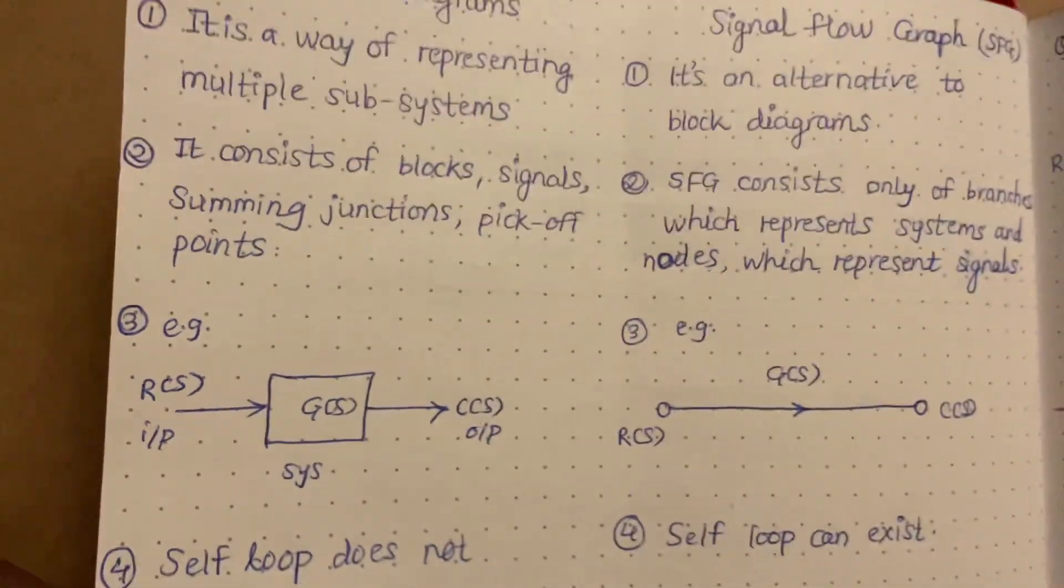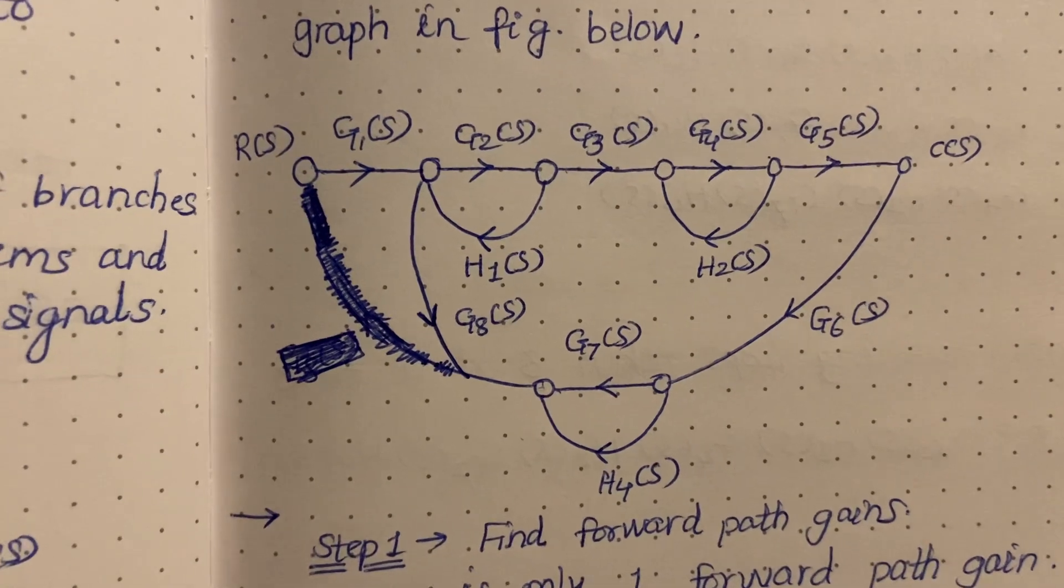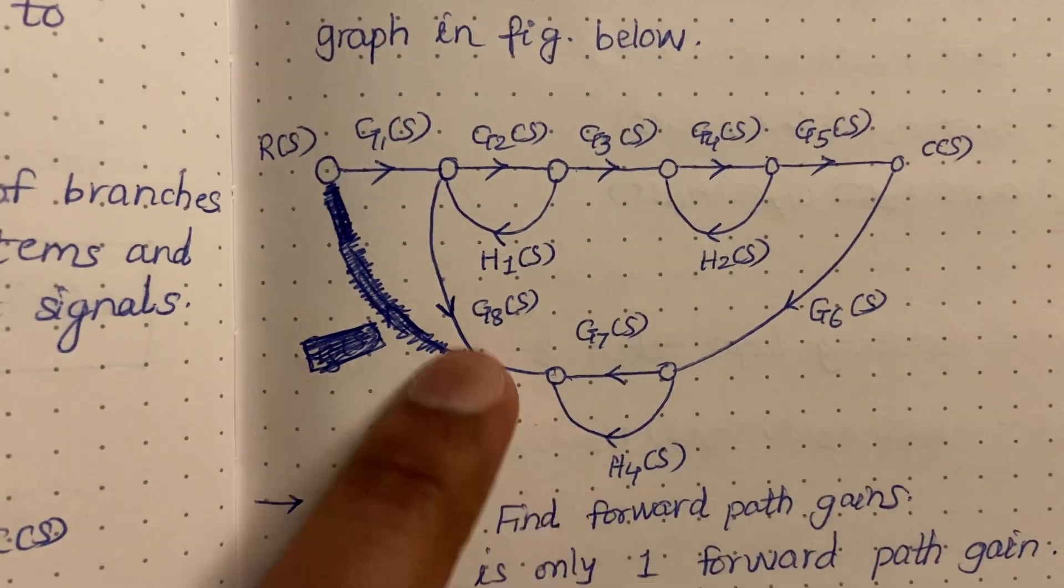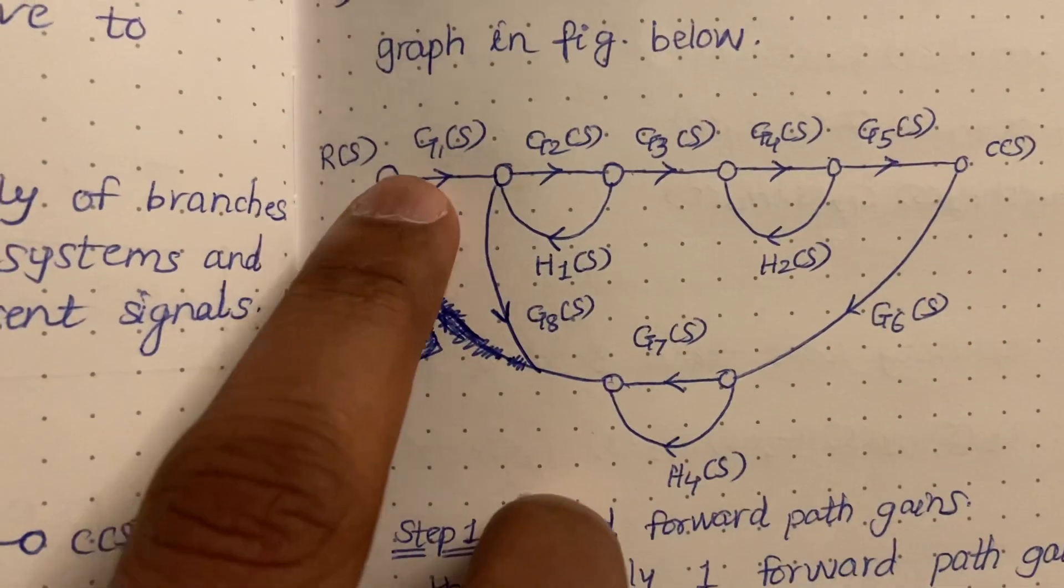So let's see. First of all, signal flow graph. Signal flow graphs will look like something like this, right? So you have nodes, different nodes, and then signals.